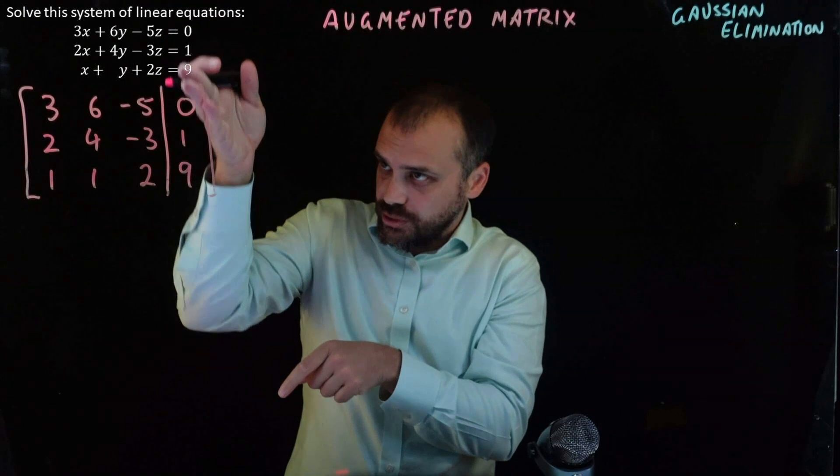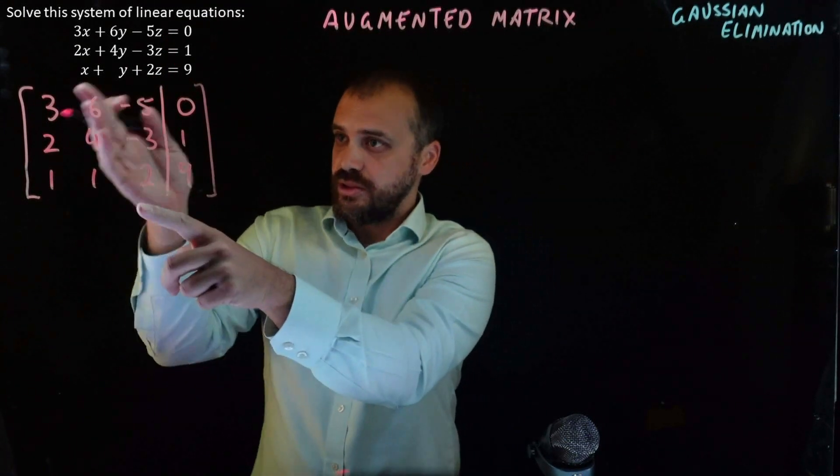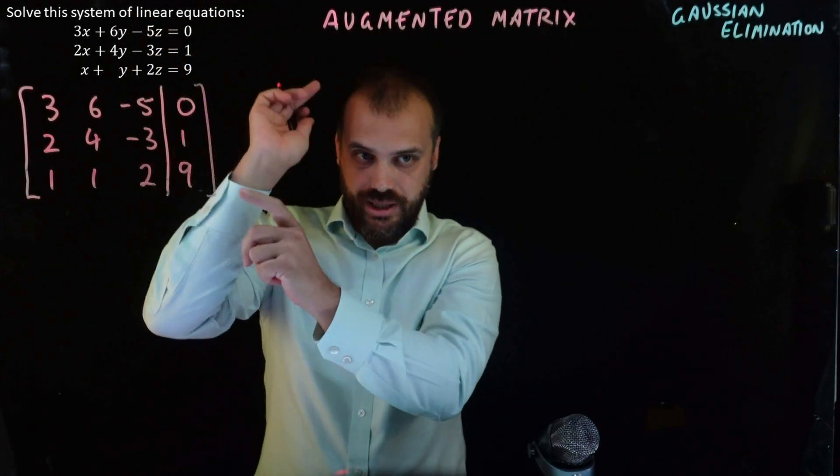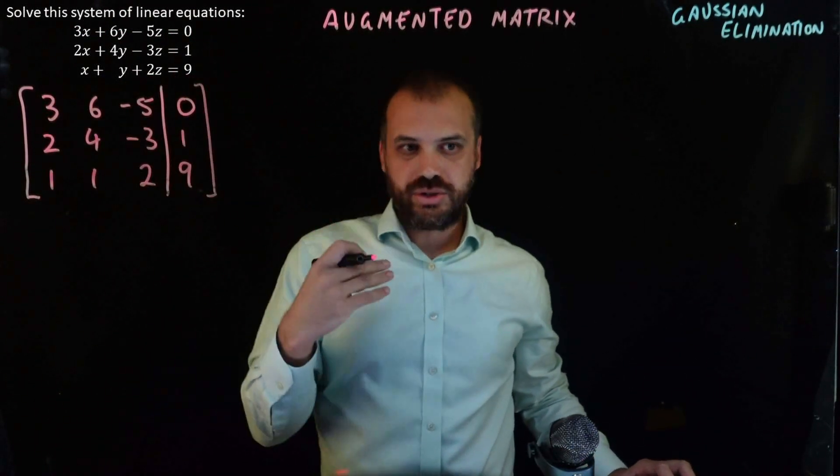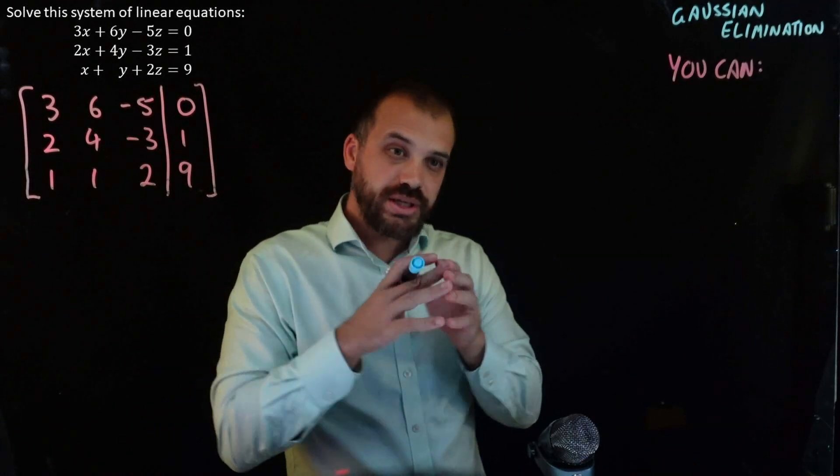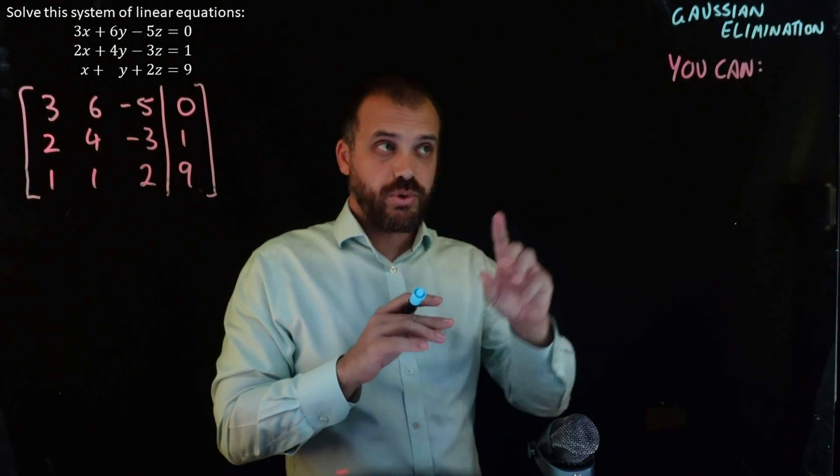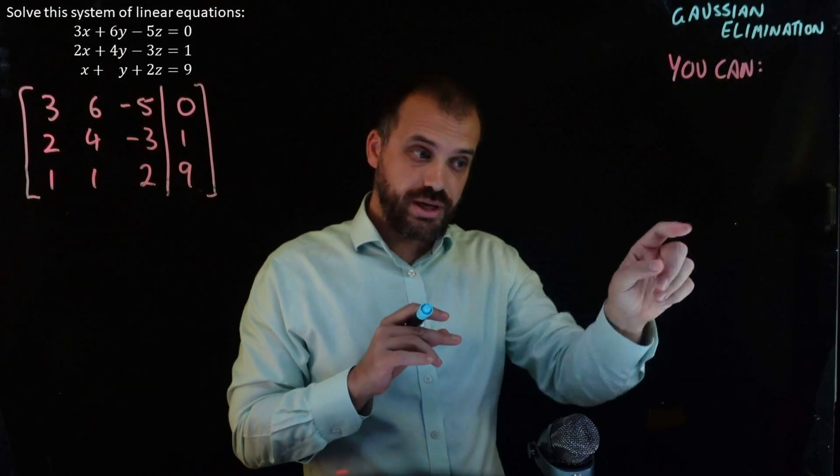All right, so we have a matrix in brackets with a line. These are the solutions, these are the equations, x, y, and z. And then we just start manipulating this to solve it. Now when it comes to Gaussian elimination, you're allowed to do whatever you want as long as you follow three rules.